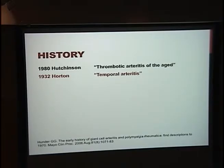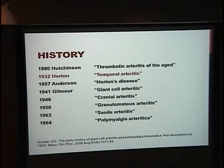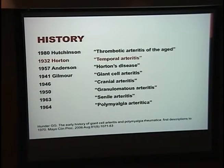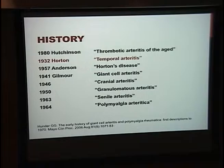Horton and his colleagues — and multiple names have been proposed, though giant cell arteritis is the one that stuck — tried to find if there was an infectious cause. They ground up bits of positive biopsies and injected them into five age-matched healthy controls. None of those controls developed the disease. The last subject had it injected into her vein and did develop fevers, malaise, and elevated ESR — but because the other five didn't, they concluded it was not an infectious process but rather some type of autoimmune process.